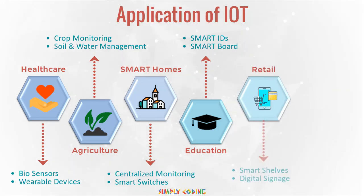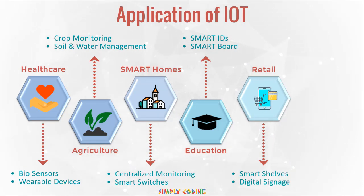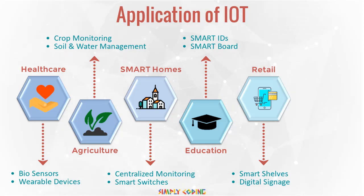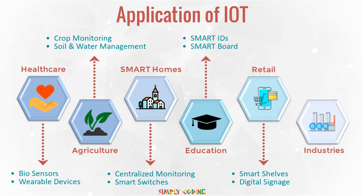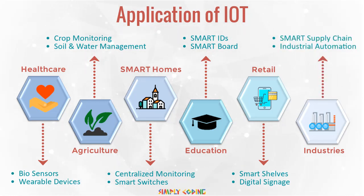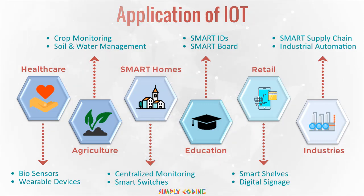IoT is used in retail for smart shelves which have digital price labeling and generate automatic notifications if shelves are lighter. Digital signage helps retail companies provide personalized and interactive shopping experiences. IoT is used in industries to maintain smart supply chains leading to better inventory management. Industrial automation helps to increase productive efficiency and flexibility.